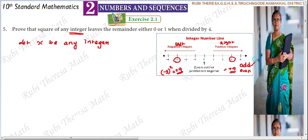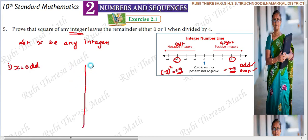Since x can be any integer, we have two cases to consider. Case 1: x is odd. Case 2: x is even. For example, odd numbers are 1, 3, 5, 7 and also minus 1, minus 3, minus 5, minus 7 — it may be either positive or negative, but odd.